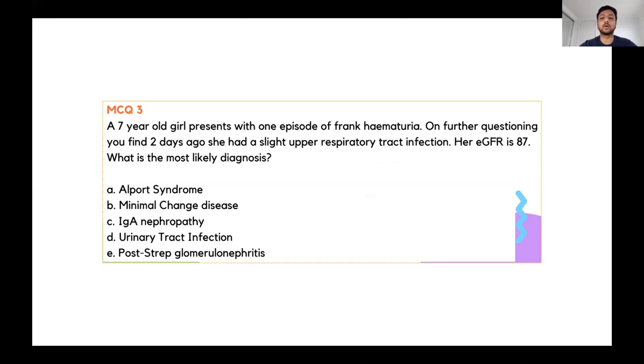Next one: seven-year-old girl presents with one episode of frank hematuria. Yeah, perfect, great. So this is IgA nephropathy. Another thing you could think is post-strep glomerulonephritis. The reason it's IgA is because of the acute onset and also the fact that it affects renal function. If it was post-strep, it's less likely to have affected their renal function. It usually occurs around 10 days post-URTI. I just put this in for completion, this is nephritic syndrome.